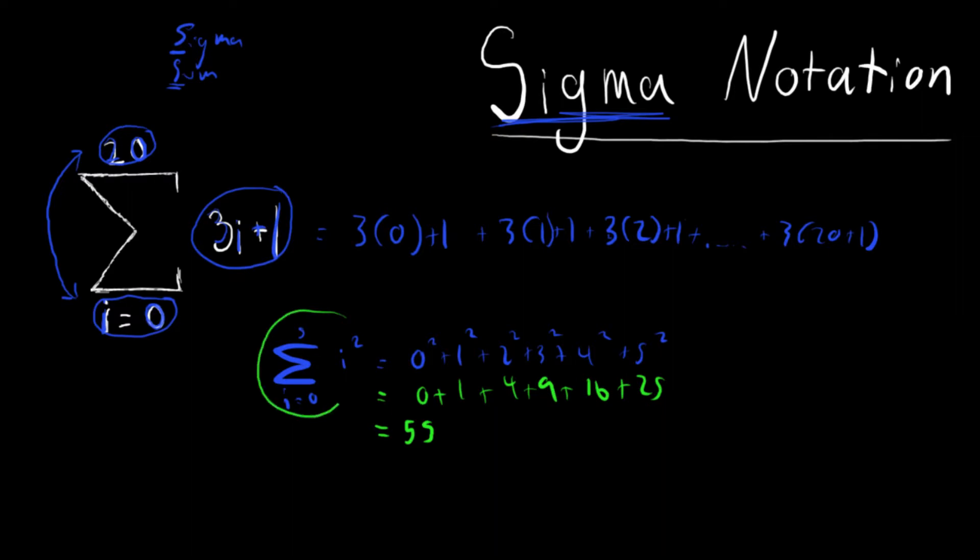This entire expression is just summing, adding up all of the i squareds from i equals 0 to 5. And that equals 55.